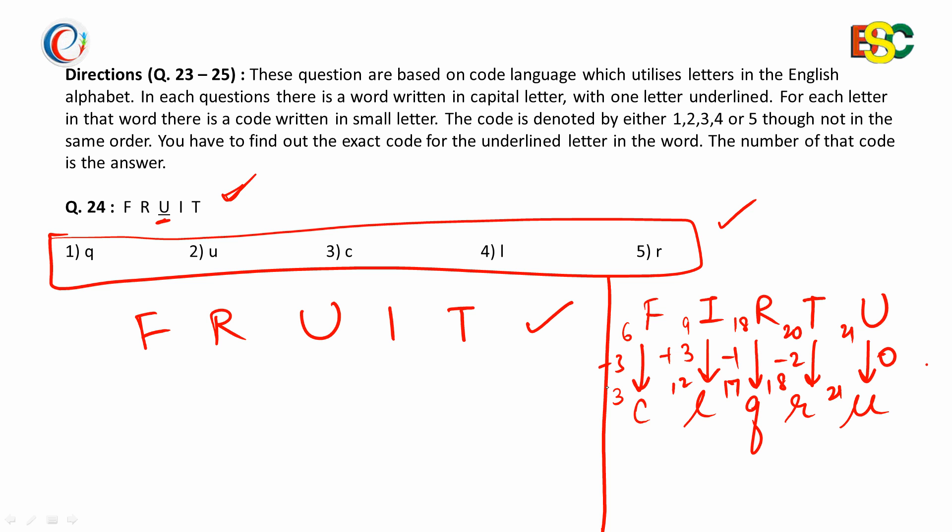So there is minus 3, plus 3, minus 1, minus 2 and 0. It is not making any meaningful pattern. So we will look for something different.